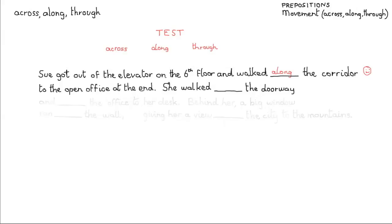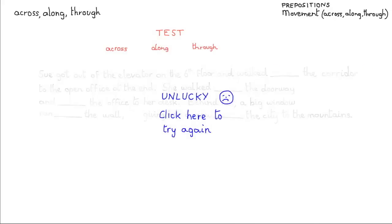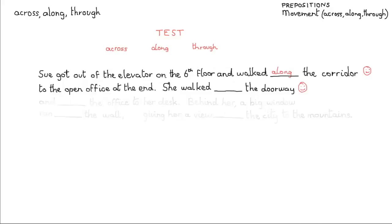And here's the next one: 'She walked the doorway.' Think about that and make your choice — click on one of the three words at the top. The answer is: through — she walked through the doorway.